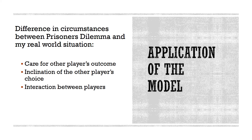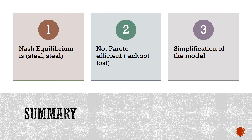Overall, we have seen that our Nash Equilibrium is steal-steal, which is not Pareto efficient since it results in the jackpot not being won, but we can see that the Prisoner's Dilemma could be seen as a simplification of our model due to differences in circumstances.